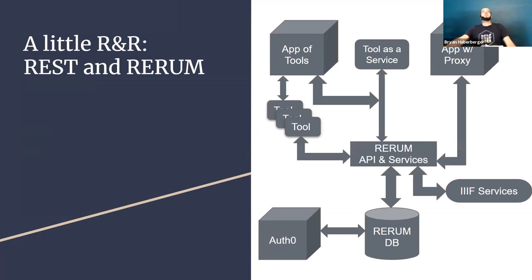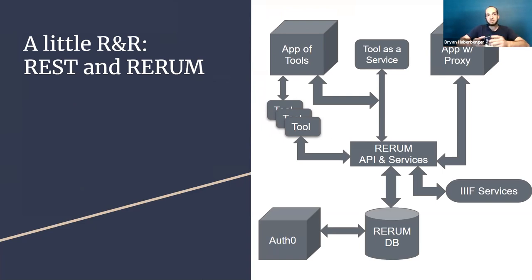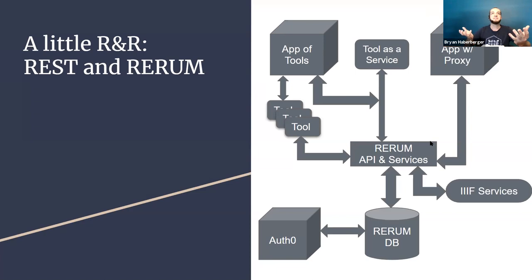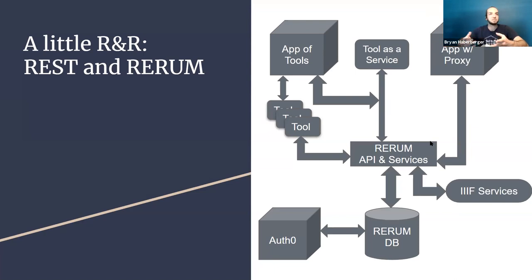Let's talk about our setup and why this works. The RERUM API and services is a centralized API and centralized set of services that full-blown apps or unit tools can talk to, with a centralized database and a centralized authentication and attribution schema. This helps with the common question of how you get data from a user click in the front end stored in the back-end database and back out. Having this centralized situation means once it's solved for one tool, it works with a lot of others.